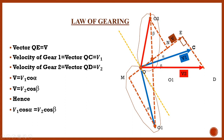The velocity of point Q moving on this common normal is V. In right-angle triangle EQC, the component gives V equal to V1 cos alpha, and in right-angle triangle DQE, V equal to V2 cos beta. Since V is constant, V1 cos alpha is equal to V2 cos beta.